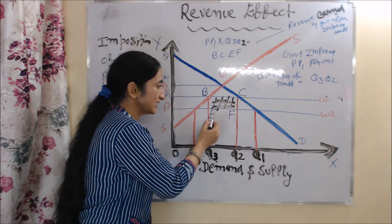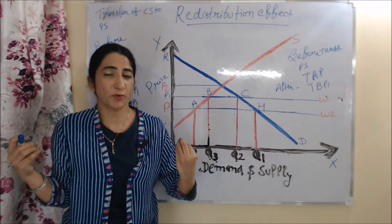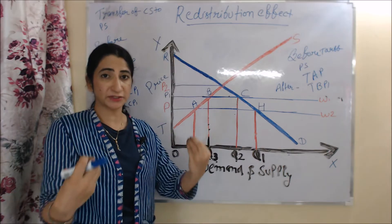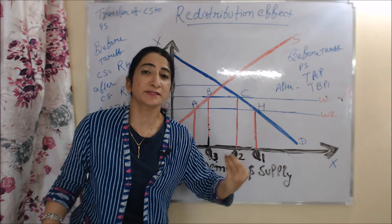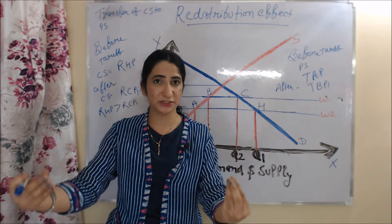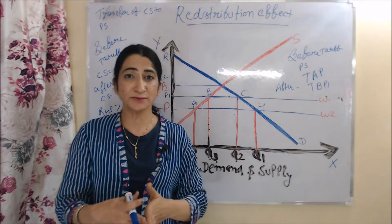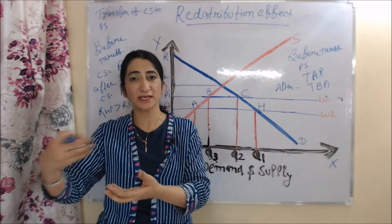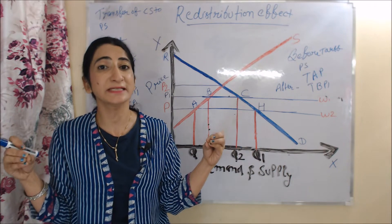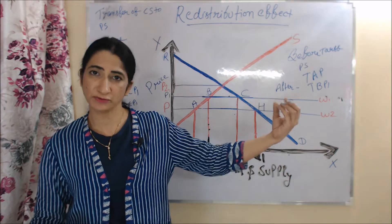Now we will talk about the redistribution effect. The redistribution effect basically shows the transfer of consumer surplus to producer surplus. As we know, after imposing tariff, price increases. When price increases, consumer surplus falls but producer surplus increases. That is why we can say there is a transfer of consumer surplus to producer surplus.